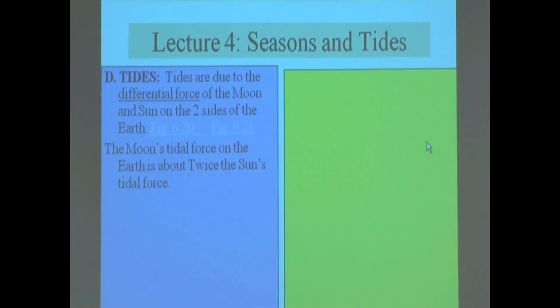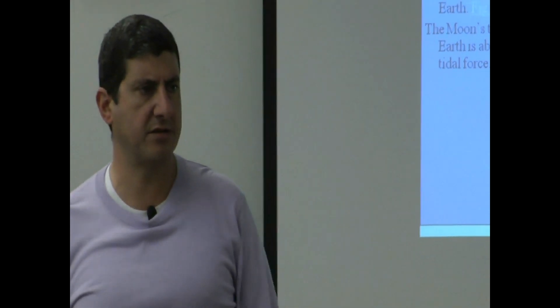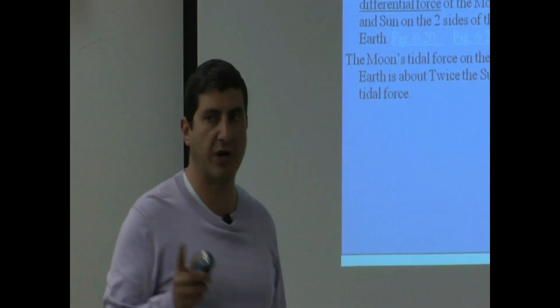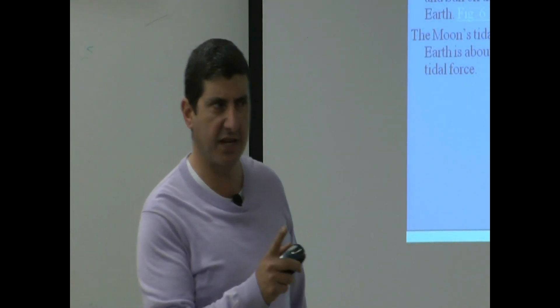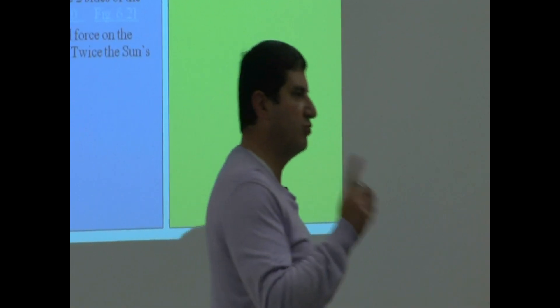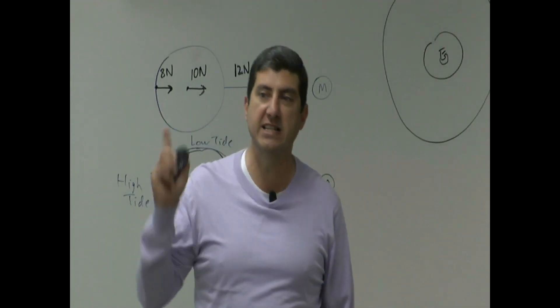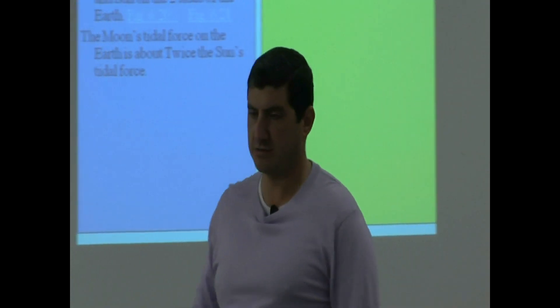The moon's tidal force on the earth is about twice the sun's tidal force. When people first learn about this, they're really surprised. Something sounds surprising about this fact — it seems to be saying the moon's force on the earth is twice the sun's force. But no, it's not saying the moon's force on the earth is twice the sun's force. It's saying the moon's tidal force is twice the sun's tidal force.